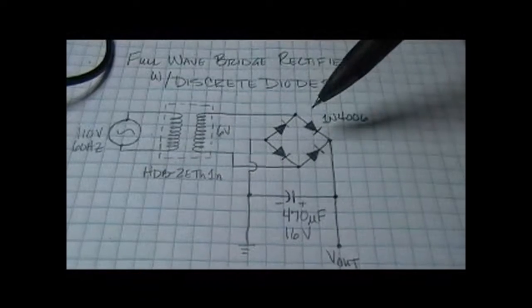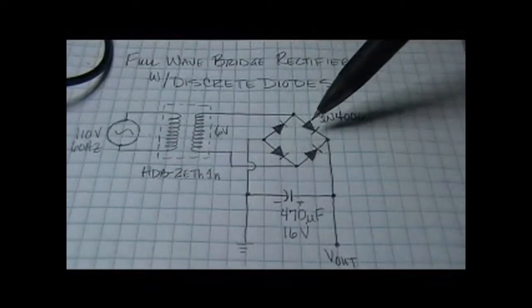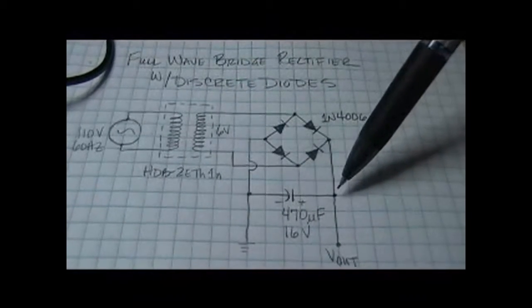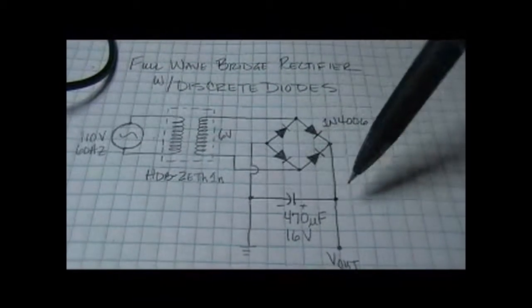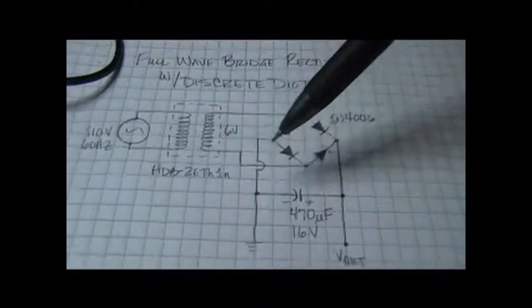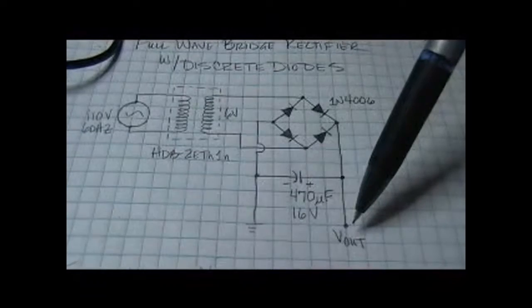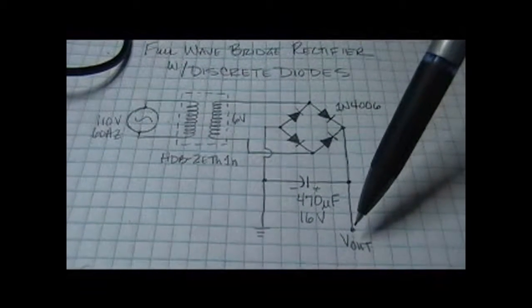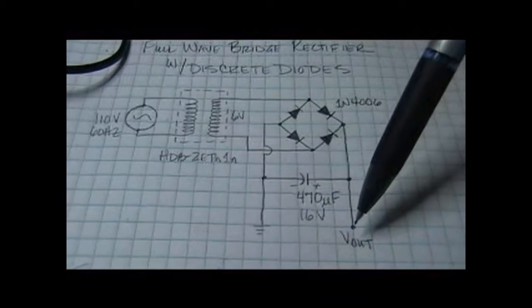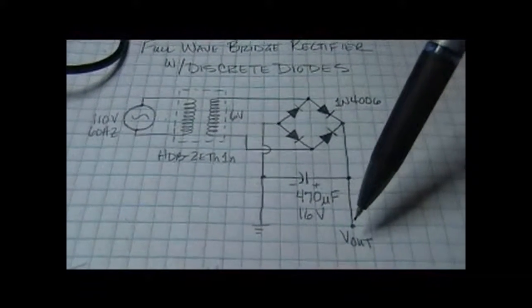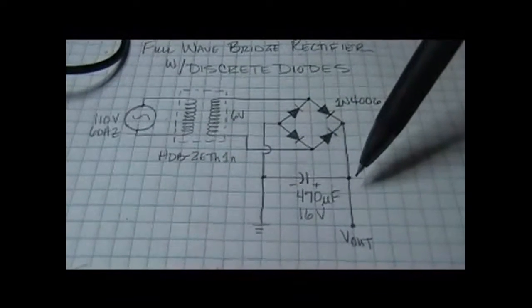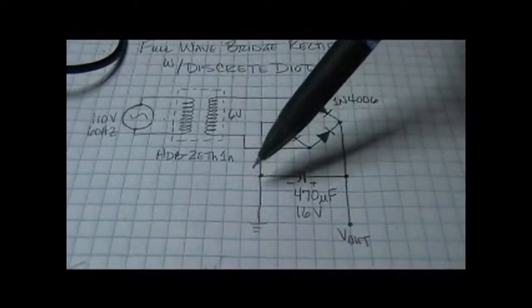So basically in one phase these two are conducting, in the other phase these two are conducting, but basically always our current is traveling plus to minus across this diode and then you're basically looking at ground and V out. Now in this particular case it's a nice pretty close to five volts, 4.8 volts, because there's really no load attached so this capacitor never discharges. Once it charges up to the max it sits there.